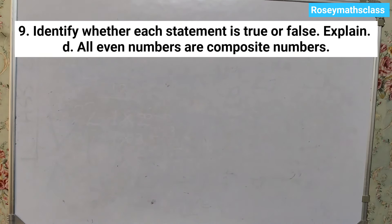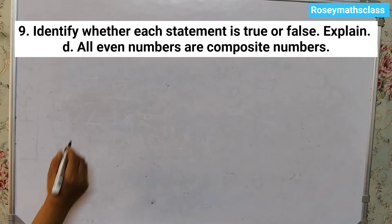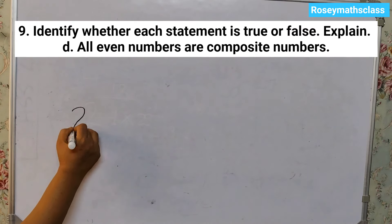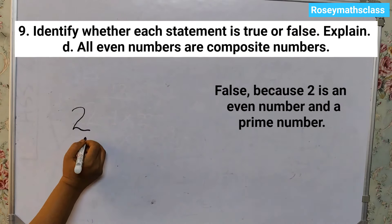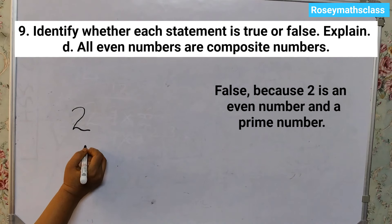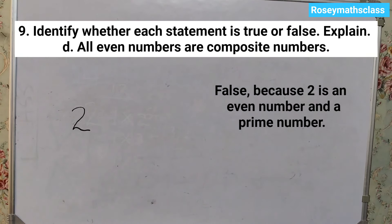D: all even numbers are composite numbers. The answer is false, because 2 is an even number and a prime number. So the answer is false.